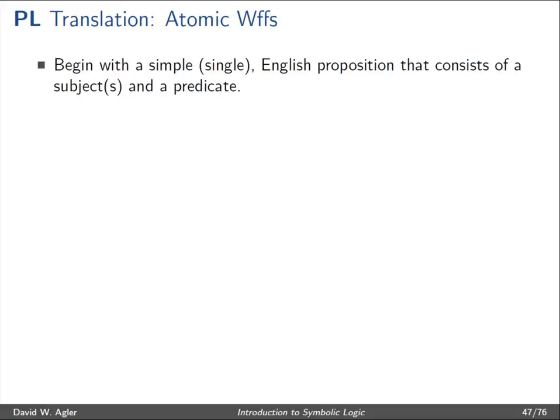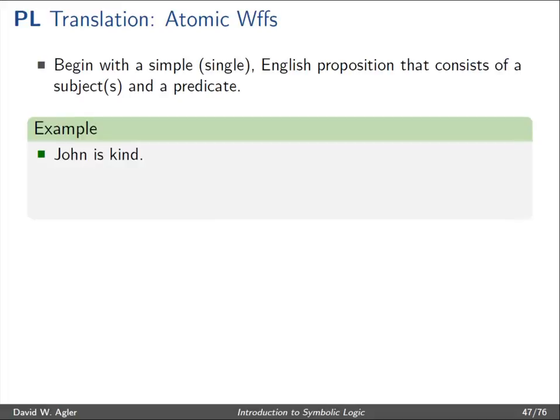Let's begin with a simple, single English proposition that consists of a subject or multiple subjects and a predicate. For example, let's take the sentence that expresses a proposition: "John is kind." It consists of a subject, John, and a predicate, is kind. In addition, we can think of "John will go to heaven" or "Sally is nicer than John." These are simple sentences.